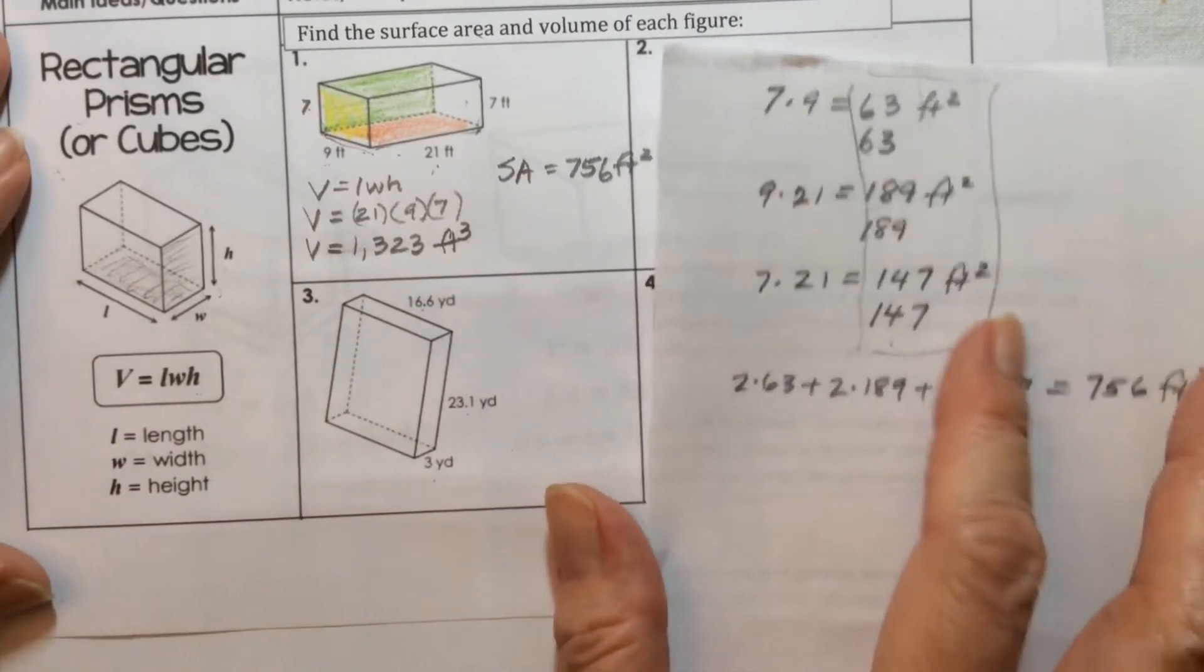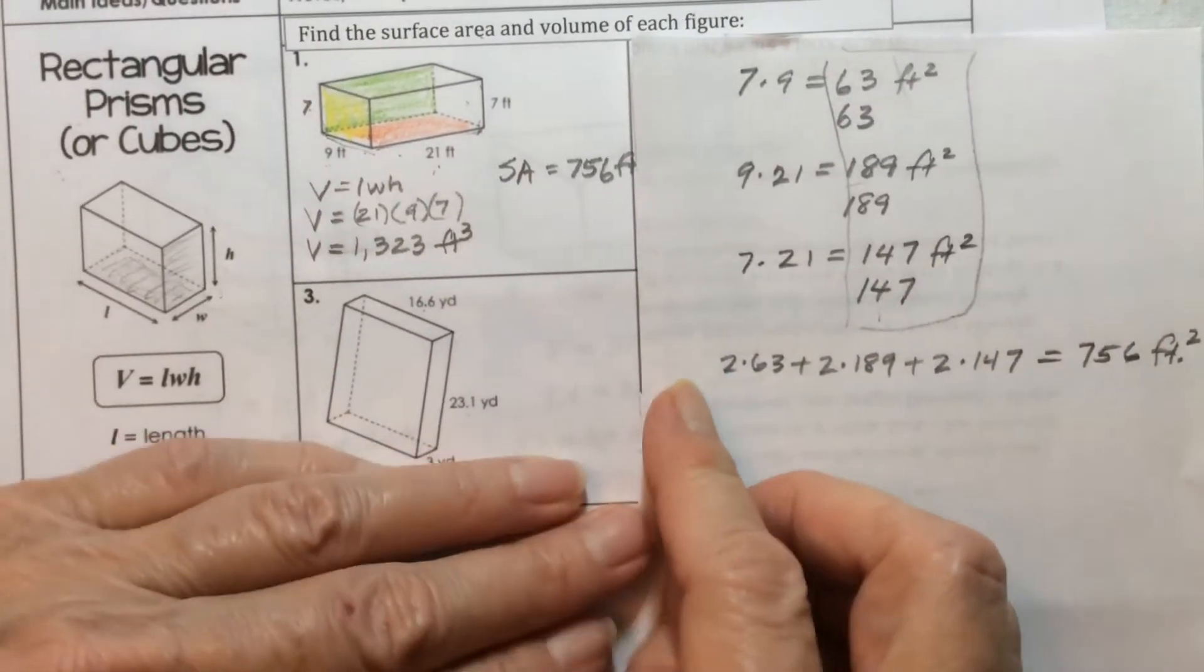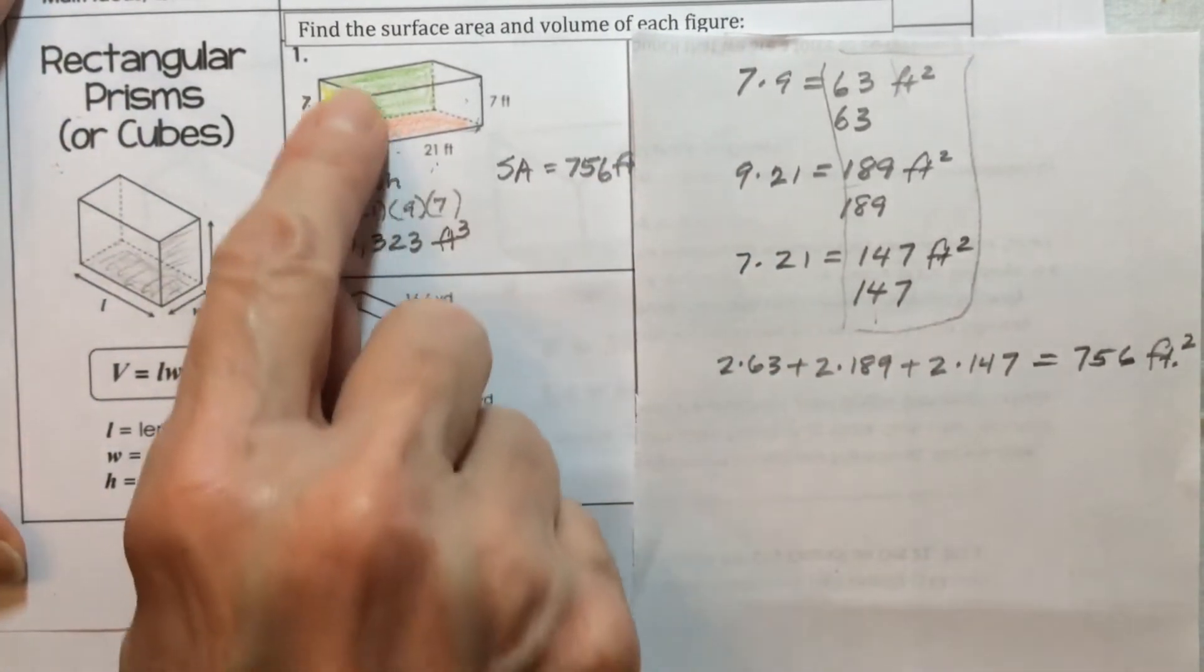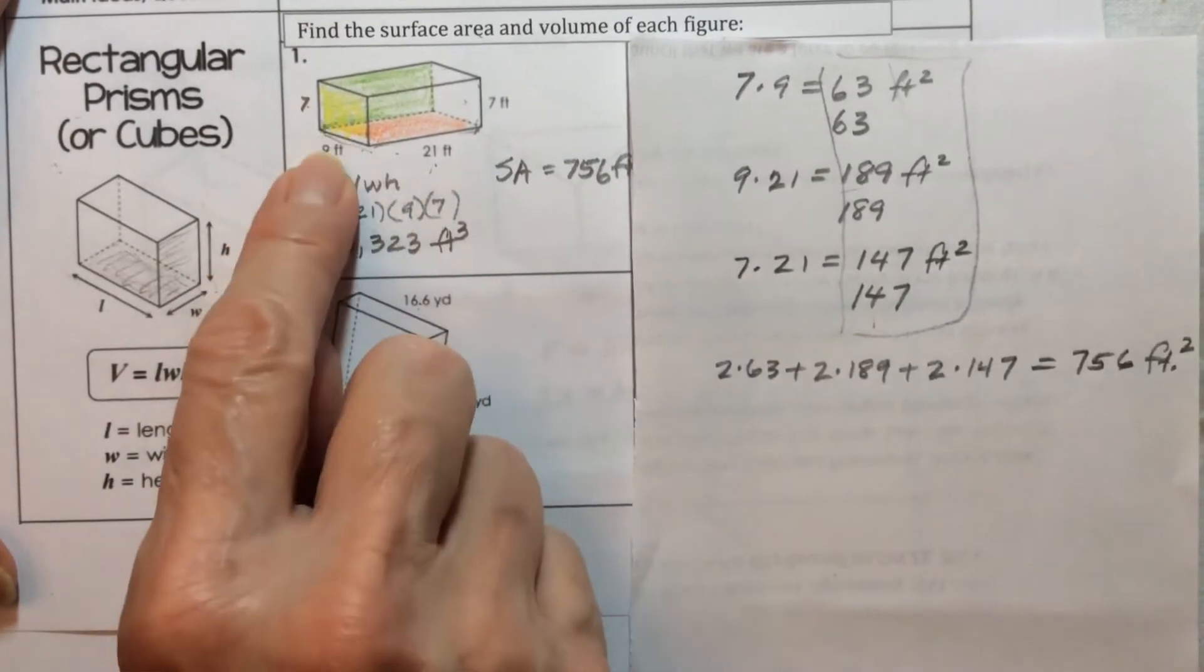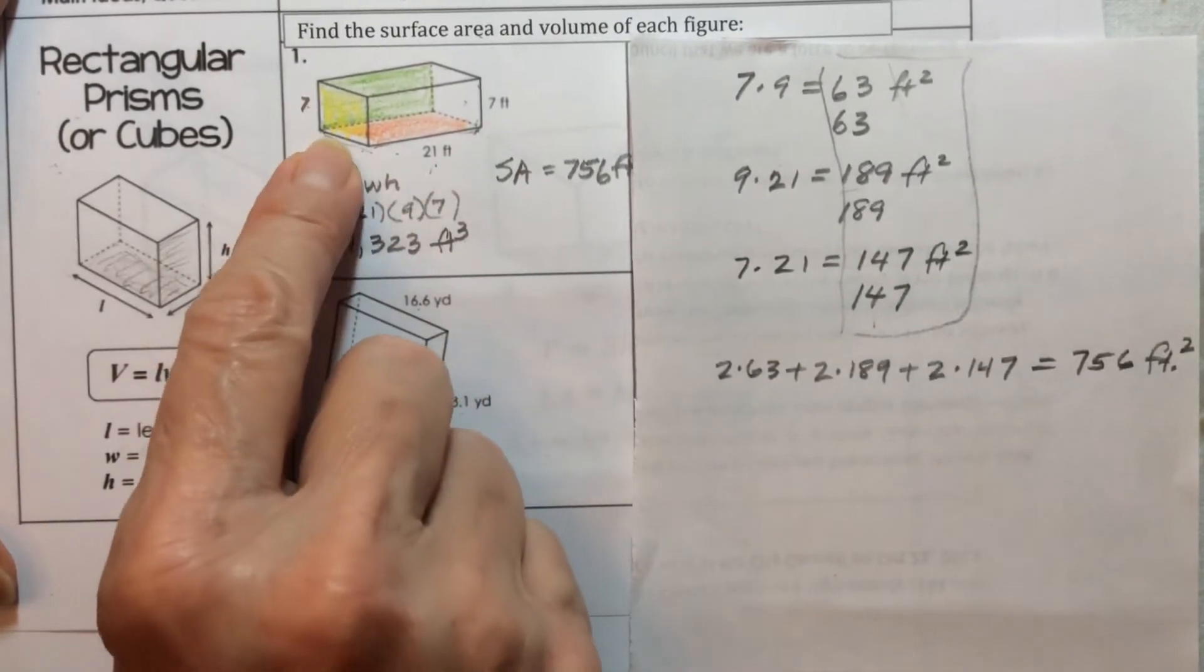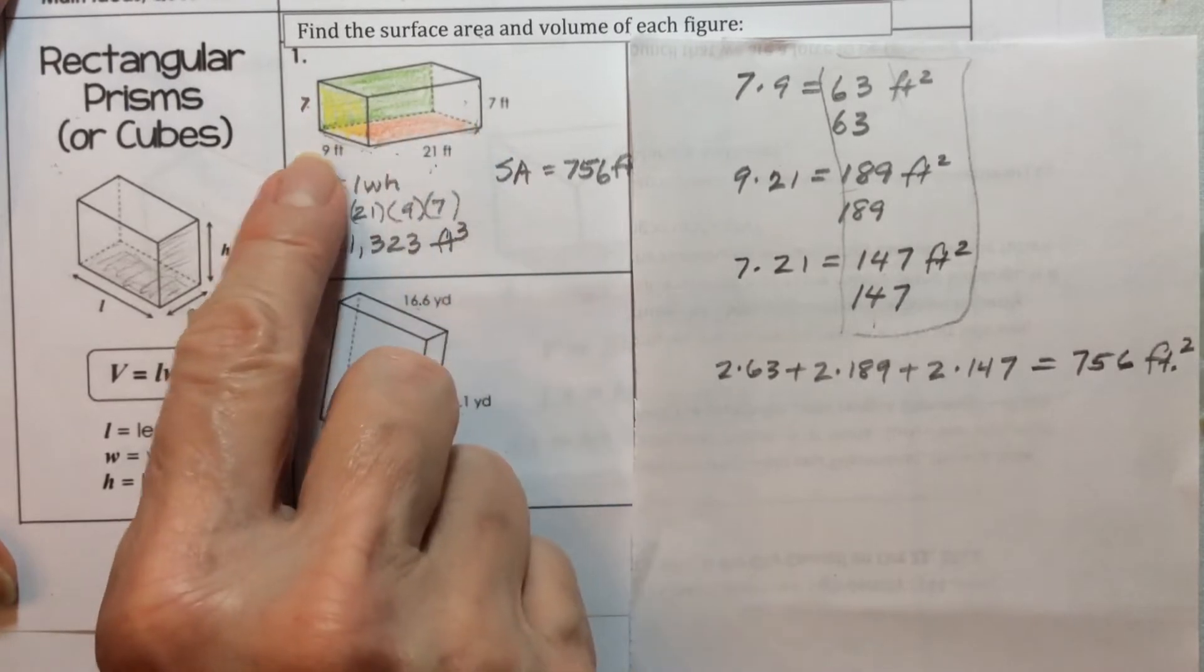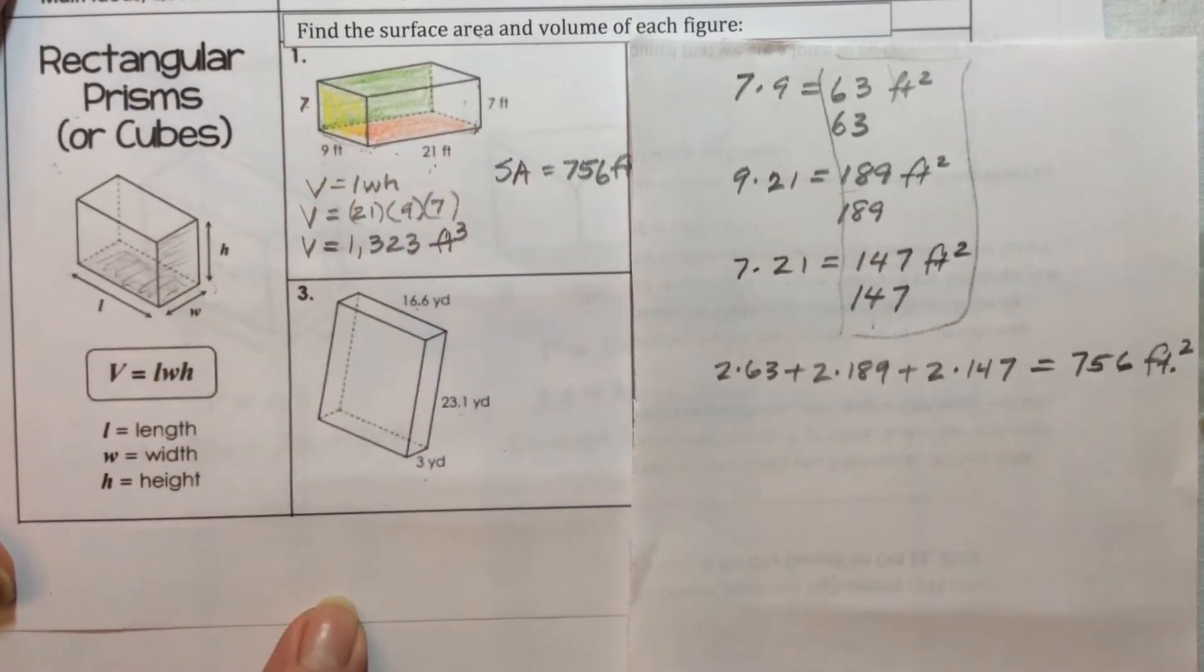Now finding the surface area was a little more complex because we had to take the dimensions and put them together in different combinations. So we had to figure out what the area is for three different size spaces.